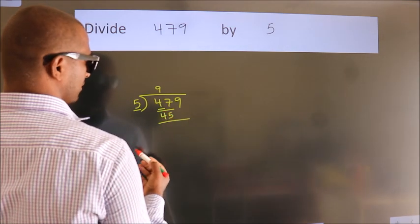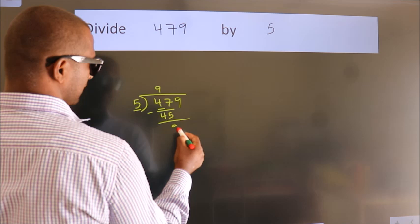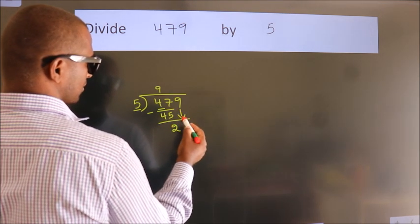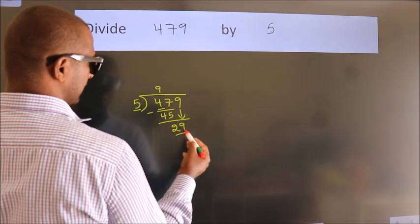Now we should subtract. We get 2. After this, bring down the next number. So 9 down. So 29.